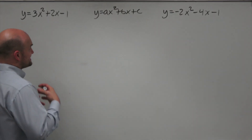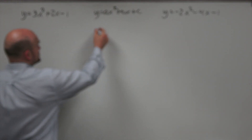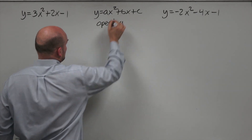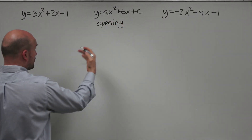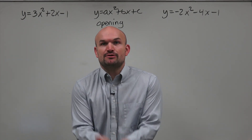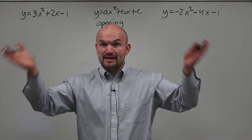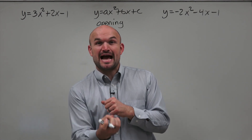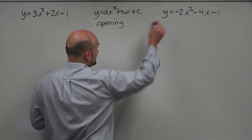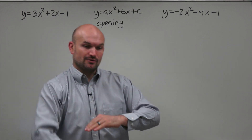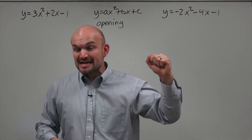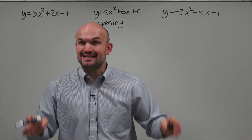I think it's easiest to start with understanding the opening. When we're looking at the opening of a parabola, we're basically just going to be looking at A. If A is positive, the graph is going to be opening up, and the vertex is going to be an absolute minimum. If A is negative, that's going to reflect the graph, and the vertex will have an absolute maximum point — the graph opens down.